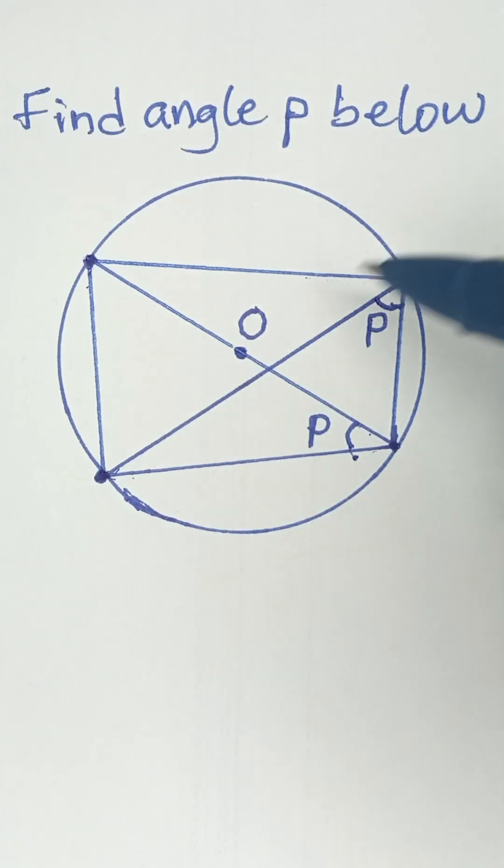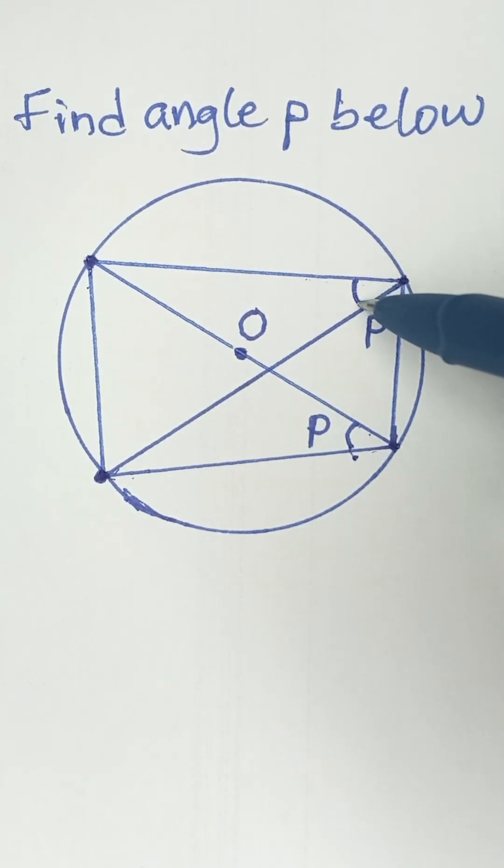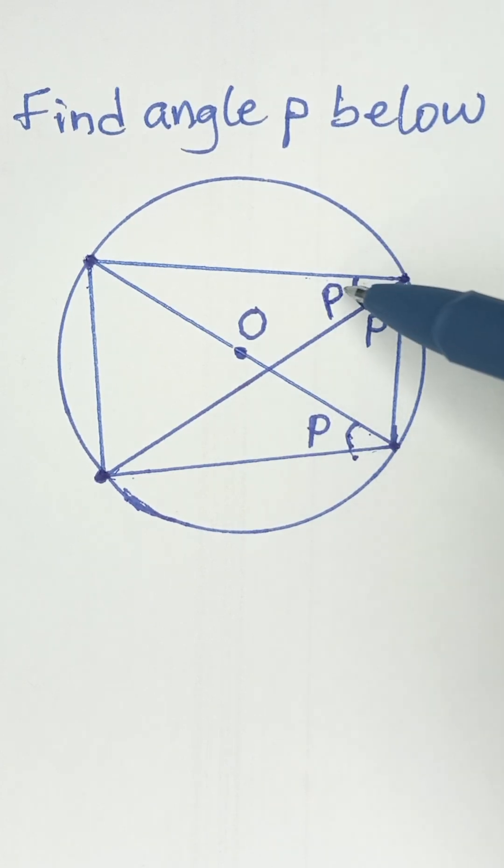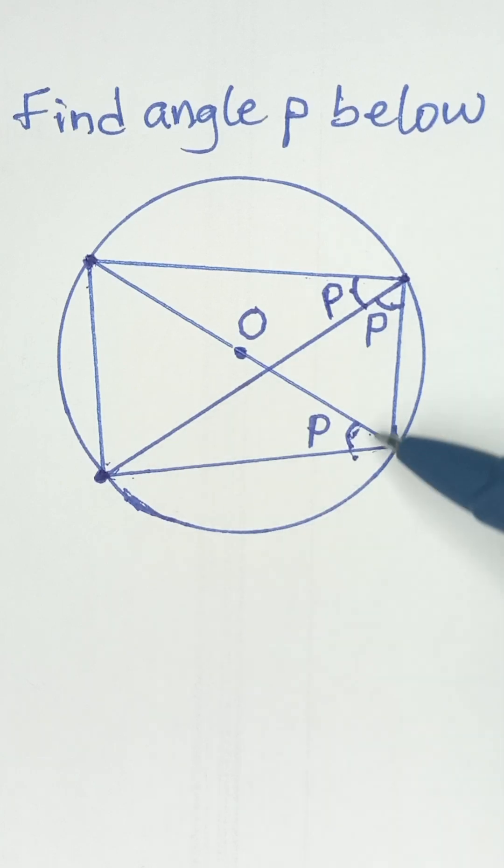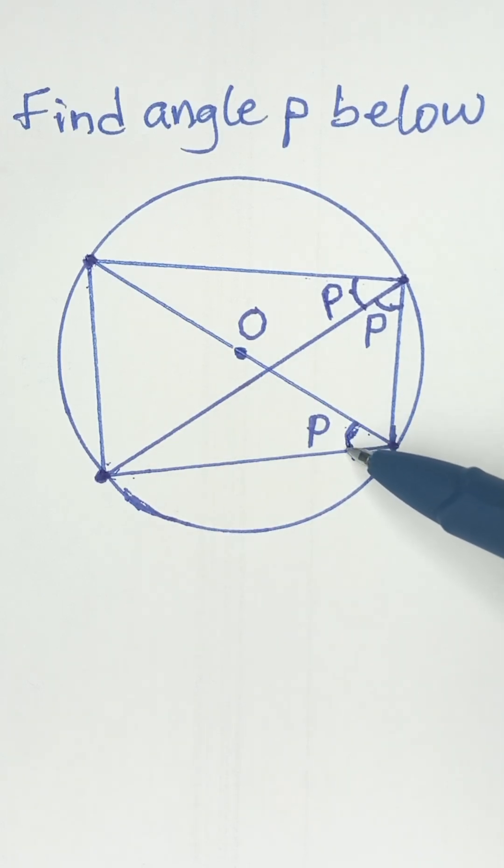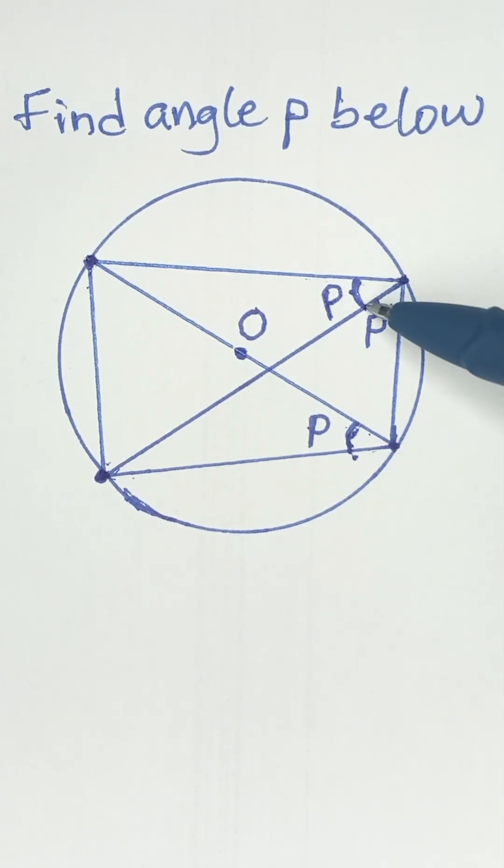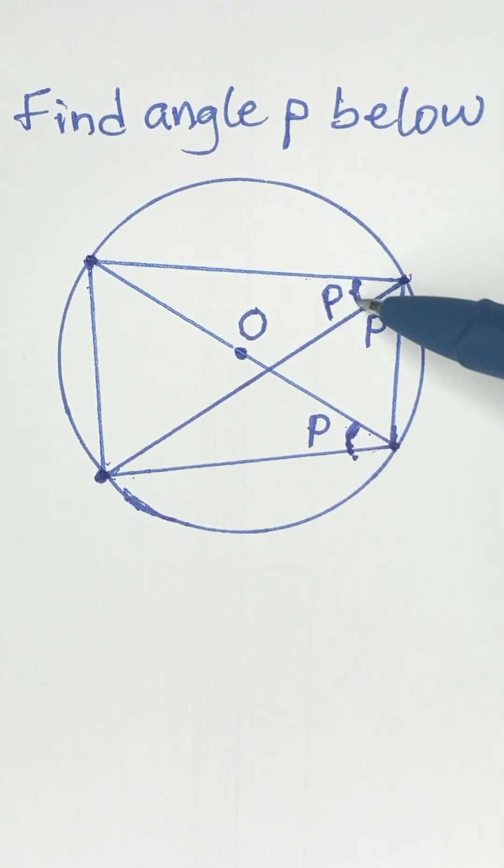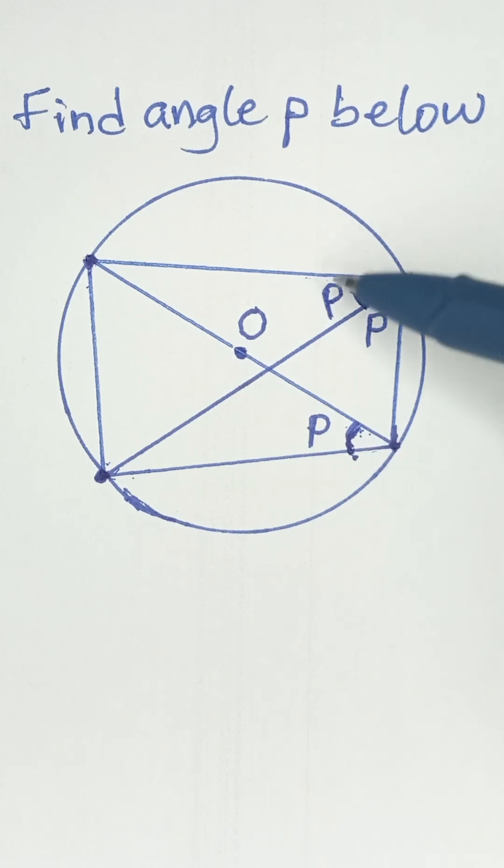Similarly, this chord will also sustain angle P at this point. Why? Because they are angles in the same segment. So when you have the same chord like that suspending angles in two different triangles that go to the circumference of a circle, then the angles are equal. So this angle P is equal to this angle as well. So this place is also P.